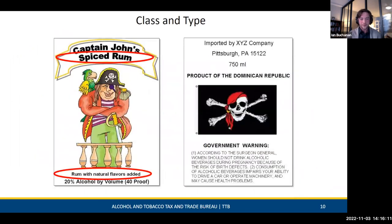Here's the class type example: you see 'Spiced Rum' and 'Rum with Natural Flavors Added' together. The fanciful name differentiates this product from other normal rums, and you have your statement of composition — 'rum with natural flavors added' — below.